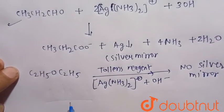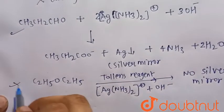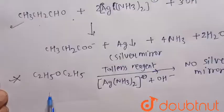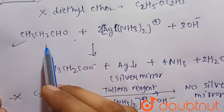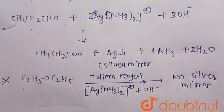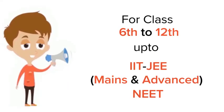So in this way we can distinguish between propanol, that is CH3CH2CHO, and diethyl ether. It gives positive Tollen's test but diethyl ether gives negative Tollen's test.